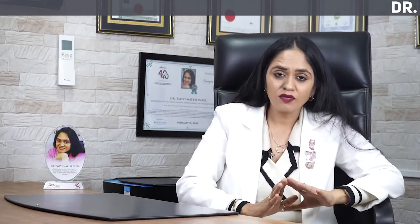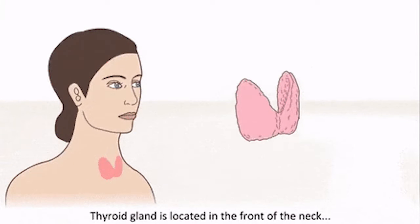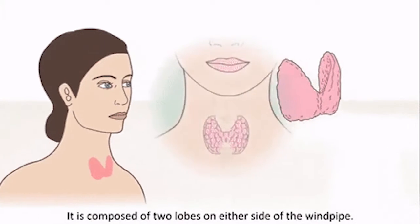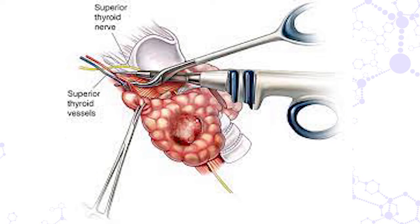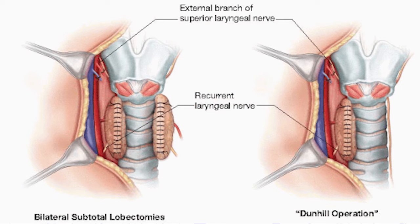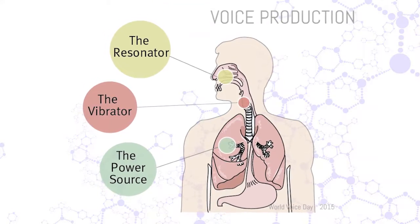Total thyroidectomy is usually performed when you have thyroid cancer. Sometimes if your thyroid gland is enlarged — what we call a goiter or a multi-nodular goiter — in those situations we can also do a total thyroidectomy. The second type of surgery is called subtotal thyroidectomy. Here we do not remove the entire thyroid gland; the portion attached to the trachea is kept intact and the rest is removed. Subtotal thyroidectomy is not routinely done for thyroid cancer, but it can be advised for a goiter, and the chances of damage to the recurrent laryngeal nerve are very, very low.